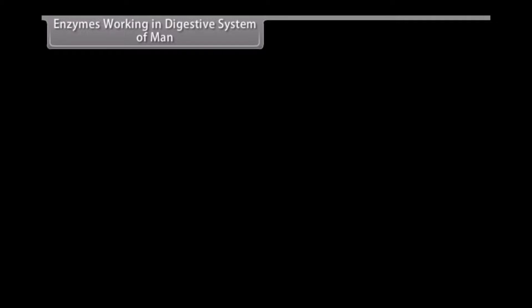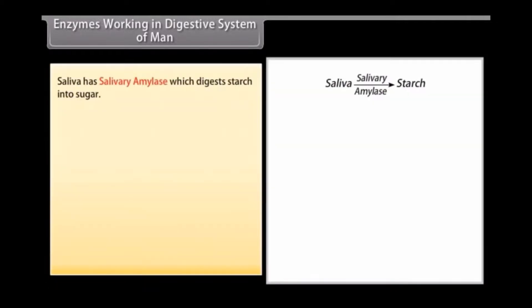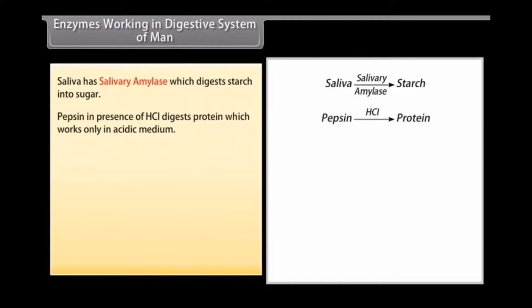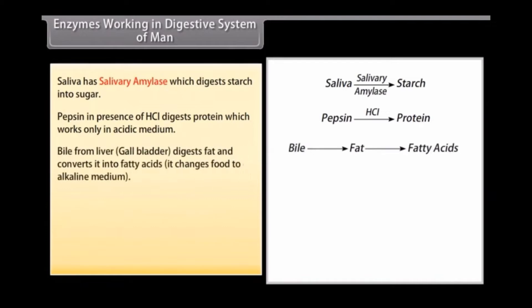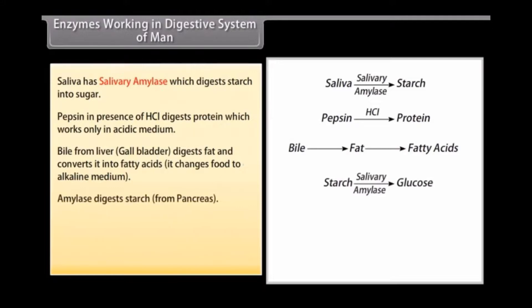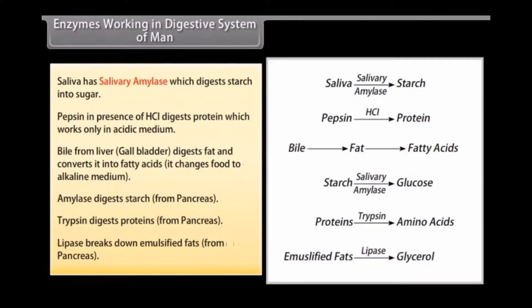Saliva contains salivary amylase which digests starch into sugar. Pepsin, in the presence of HCl, digests proteins and works only in acidic medium. Bile from the liver and gallbladder digests fat, converting it into fatty acids, and changes the food medium to alkaline. From the pancreas: amylase digests starch, trypsin digests proteins, and lipase breaks down emulsified fats.